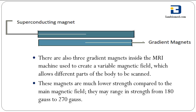There are 3 gradient magnets in the MRI machine. These are much lower strength compared to the main magnetic field. While the main magnet creates an intense, stable magnetic field around the patient, the gradient magnets create a variable field which allows different parts of the body to be scanned. They may range in strength from 180 Gauss to 270 Gauss.